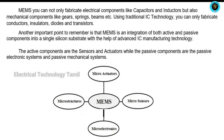IC technology is used as conductor, insulator, dials and transistors, so we can fabricate it. MEMS is active and passive — we can manufacture both components on a single silicon substrate: active components like sensors and actuators, and passive components like electronic and mechanical systems.